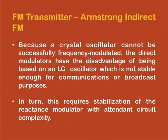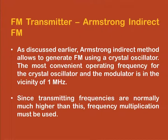To summarize the Armstrong indirect FM method: a crystal oscillator cannot be successfully frequency modulated for wide band FM directly, so narrow band FM is first generated using indirect modulation with the crystal oscillator, then frequency multipliers achieve the desired frequency deviation. The most convenient operating frequency for the crystal oscillator and modulator is around 1 MHz, and frequency multipliers are then used to achieve the desired carrier frequency and frequency deviation for FM transmission.